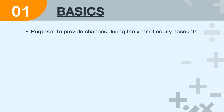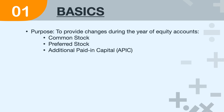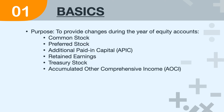The purpose of the Statement of Stockholders' Equity is to showcase all the changes that occur during the year in various equity accounts. Now what are those equity accounts? They are common stock, preferred stock, additional paid-in capital, retained earnings, treasury stock, and accumulated other comprehensive income.